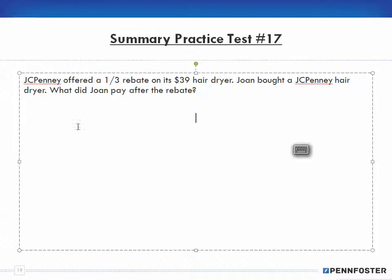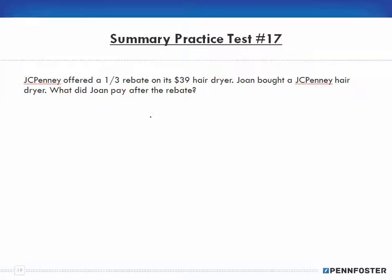Last question, number 17: JCPenney offered a one-third rebate on its $39 hair dryer. Joan bought a JCPenney hair dryer. What did Joan pay after the rebate? So if the hair dryer is $39 and the rebate is one-third, we can figure out the rebate and subtract it from the dollar amount. Or, since it was a one-third rebate, that means I'm only paying two-thirds of that amount.